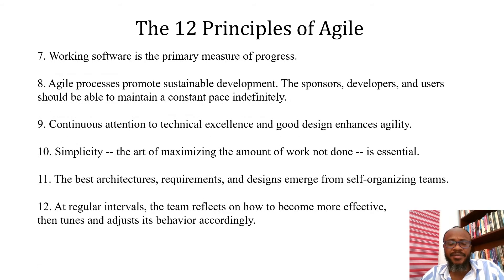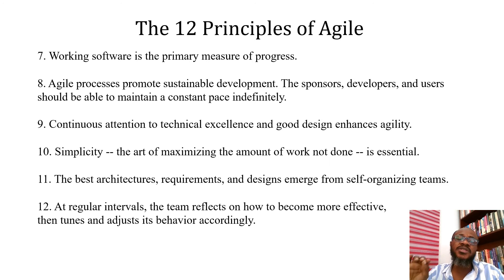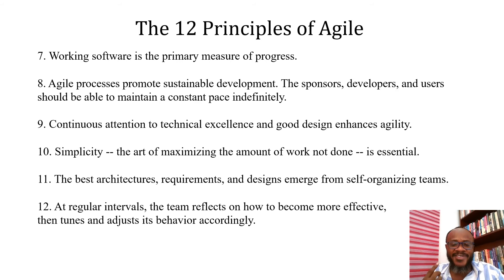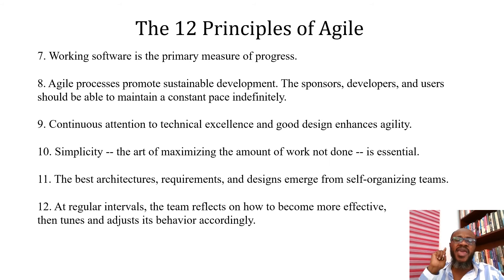Point seven: working software is the primary measure of progress. Eight: Agile processes promote sustainable development — the sponsors, developers, and users should be able to maintain a constant pace indefinitely. Nine: continuous attention to technical excellence and good design enhances agility. Ten: simplicity — the art of maximizing the amount of work not done is essential.